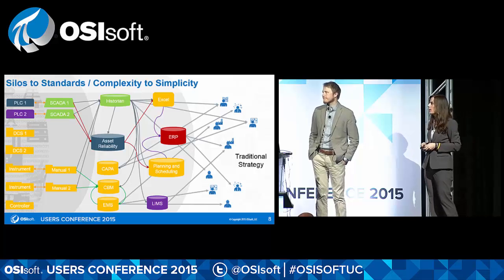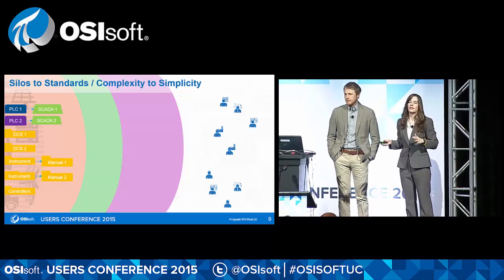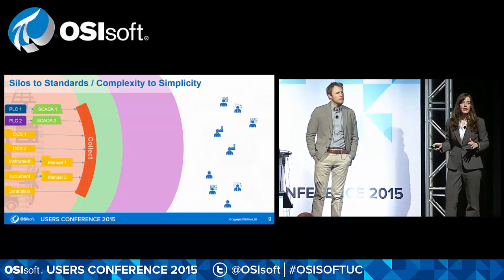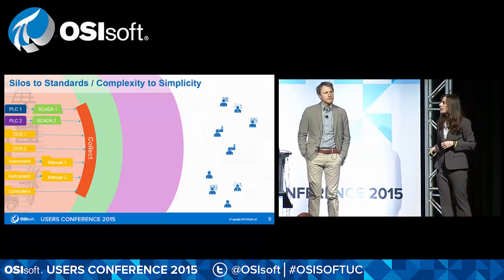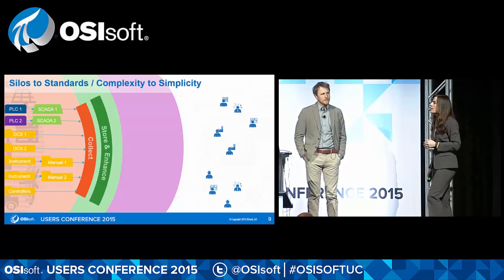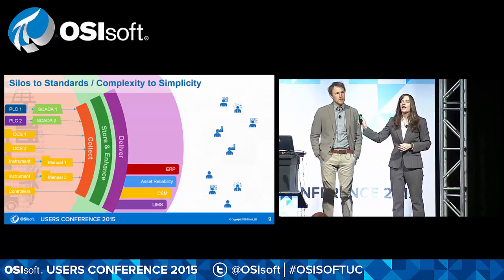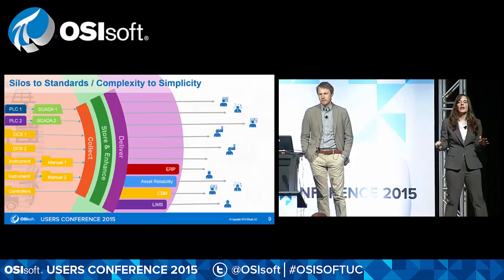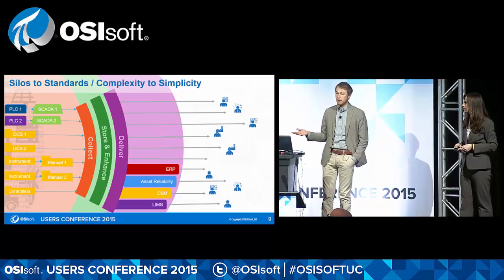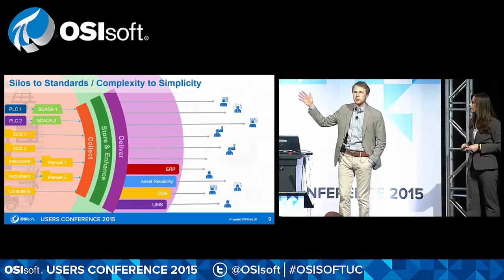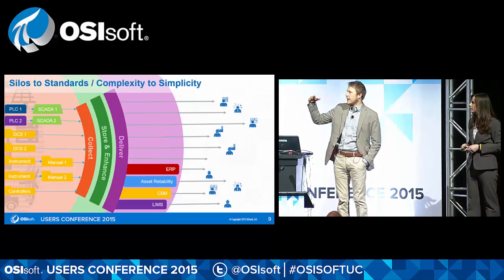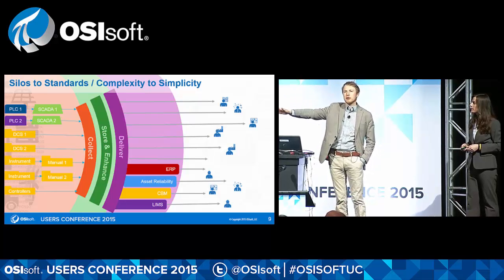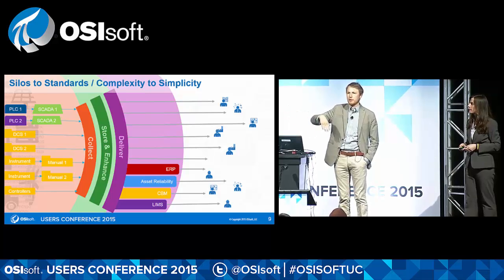With the PI system, we simplify this with three layers. The first layer is responsible for collecting data from any data source. The second layer is responsible for storing and enhancing that data. The third layer delivers that data. These are the same data sources and the same users and systems, but done in a much more simplified way. Our products map onto those three layers. We also deliver data to external systems like asset reliability or enterprise resource planning from one clean spot, so they don't have to spaghetti data around.